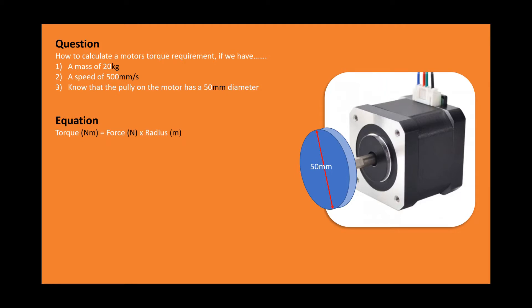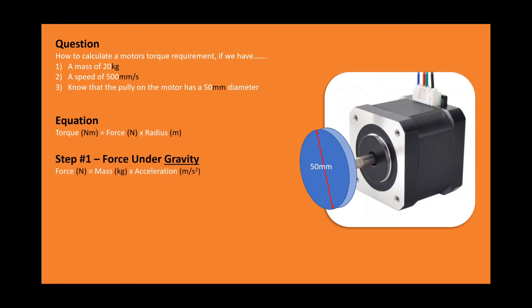The equation we're going to use is: torque equals force times the radius. The first step is to work out the force under gravity to lift the 20 kilogram mass. Force in newtons equals 20 kilograms times acceleration — in this case we're using gravity, which is 9.81 meters per second squared.